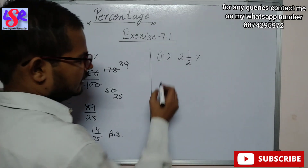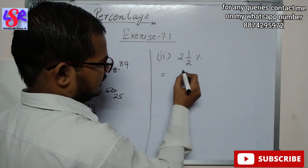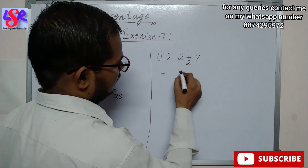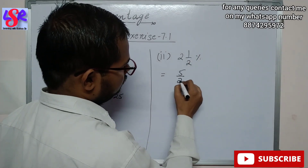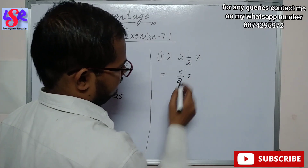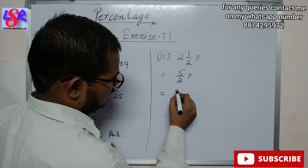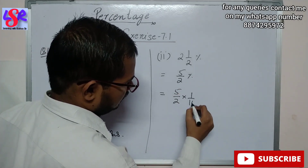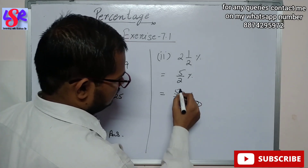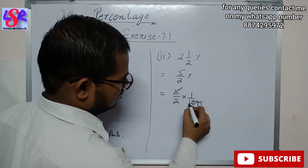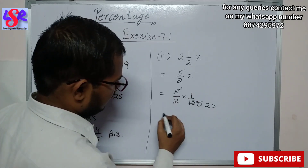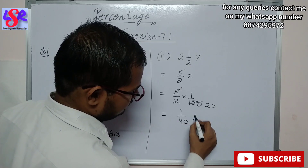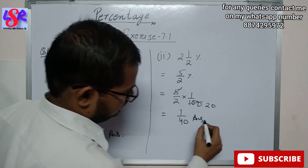Let's see one more part. We have 2 and 1/2 percent, which equals 5/2 percent. On removing the percentage, this can be written as 5/2 into 1 upon 100. The 5 cancels with 100 to get 20, and this becomes 1 upon 40 as the answer.